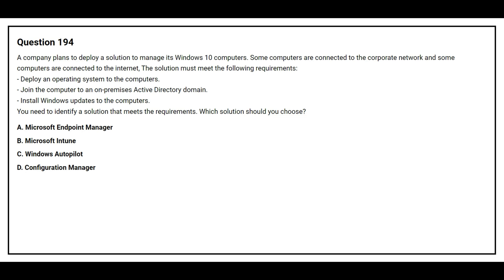Question number 194. A company plans to deploy a solution to manage its Windows 10 computers. Some computers are connected to the corporate network and some are connected to the internet. The solution must meet the following requirements: deploy an operating system to the computers, join the computer to an on-premises Active Directory domain, and install Windows updates to the computers. Which solution should you choose?